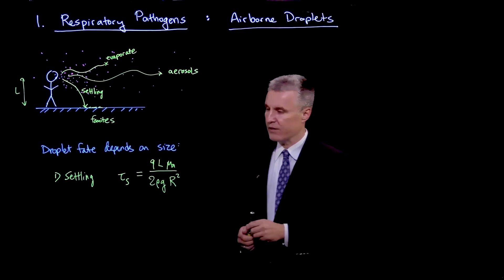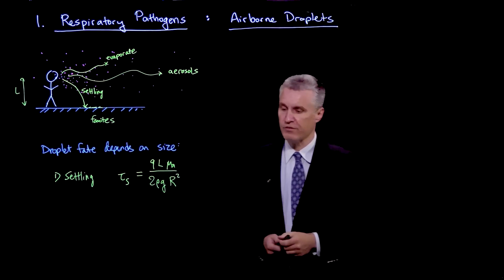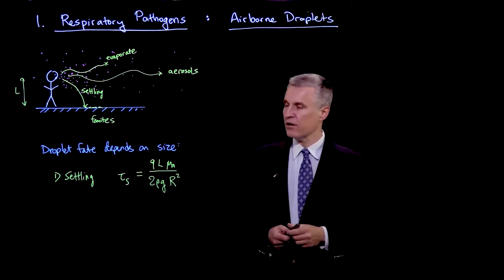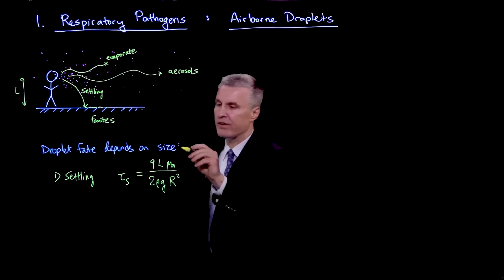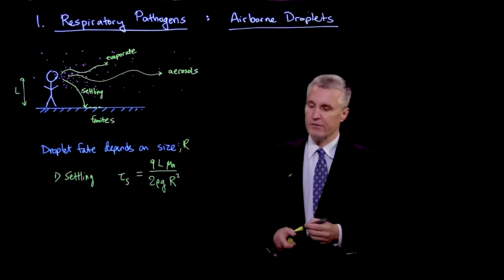L is the height which you're going to fall, mu A is the viscosity of the air, rho is the density of the droplet, excuse me, of the liquid, G is the gravitational acceleration, and R is the size of the droplet, the radius.